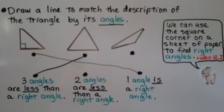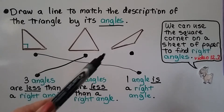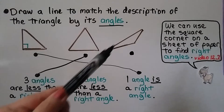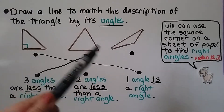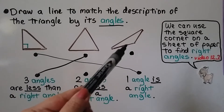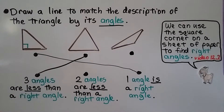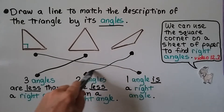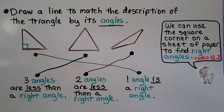Looking at the remaining triangle, we can see it has two tiny angles and one angle that looks much more open than a right angle. So it has two angles less than a right angle. Remember, you can always use the corner of a sheet of paper to help you figure out if an angle is a right angle, less than, or greater than a right angle.